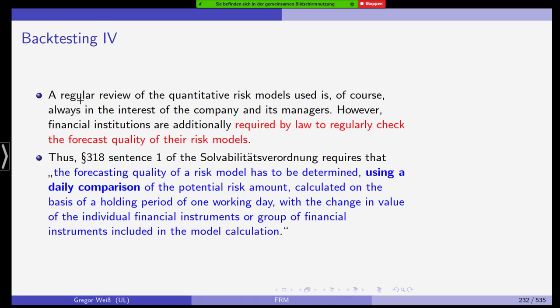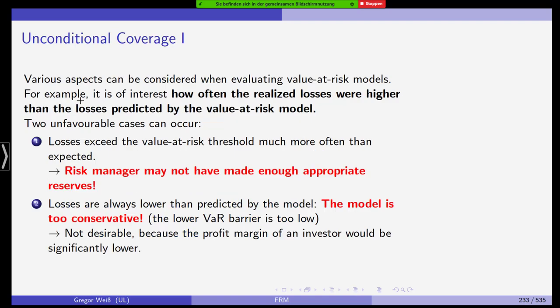This is in the self-interest of banks and risk managers. If you are a risk manager, you don't want to use a risk model that is inaccurate. However, financial institutions, both banks and insurance companies, they are required by law to regularly check the forecast quality of their risk models. Thus, we have paragraph 318, sentence one of the Solvency Regulation, the Solvabilitätsverordnung, that requires banks to the following: The forecasting quality of a risk model has to be determined using a daily comparison of the potential risk amount calculated on the basis of a holding period of one working day with a change in value of the individual financial instruments or group of financial instruments included in the model calculations. Backtesting is required from the supervisors.